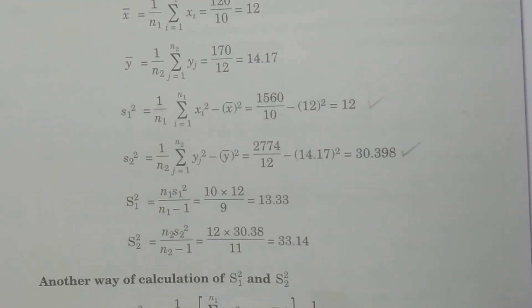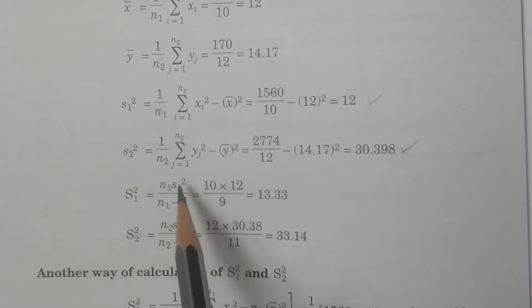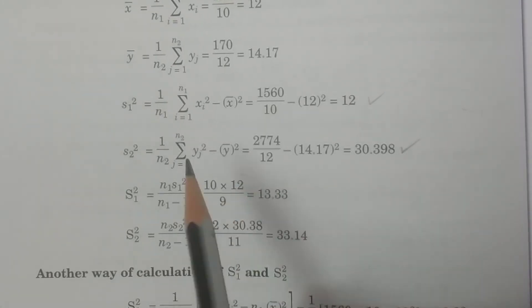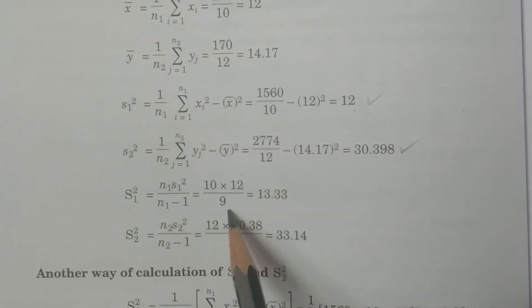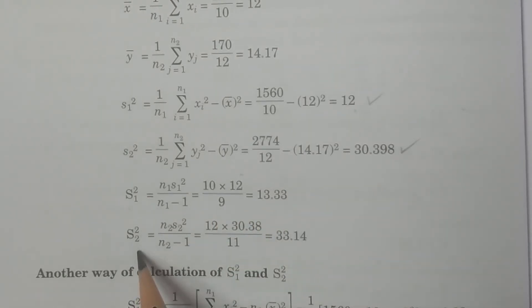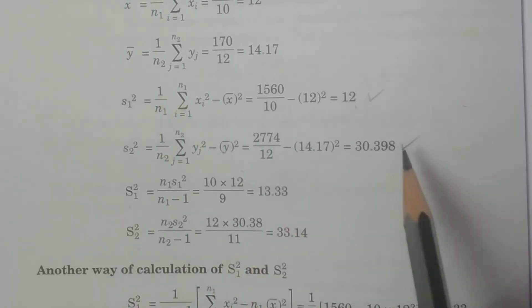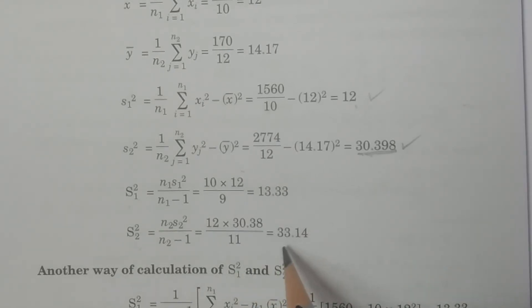Now calculate the corrected (capital) sample variances S1² and S2². S1² = n1 × s1² / (n1 − 1) = 10 × 12 / 9 = 13.33. Similarly, S2² = n2 × s2² / (n2 − 1) = 12 × 30.398 / 11 ≈ 33.14. Always calculate these two values before computing the F test statistic.